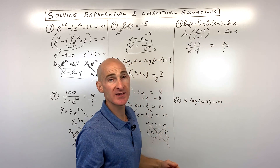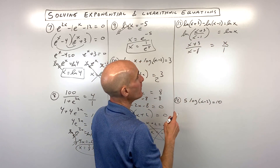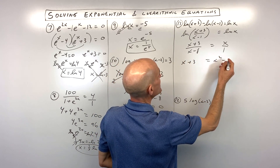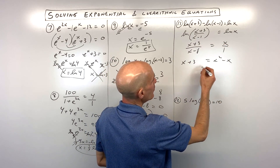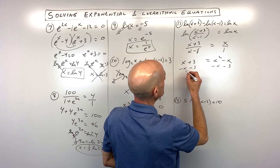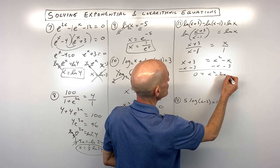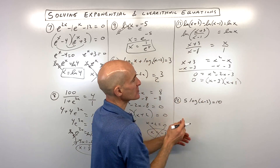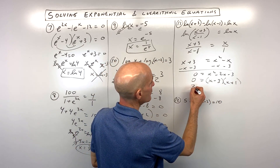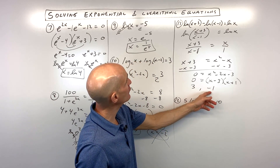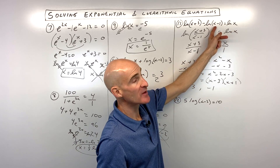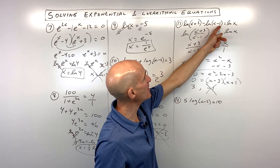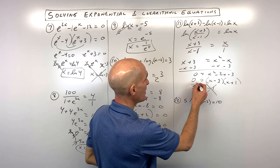Think of x as x over 1 and cross-multiply using the means-extremes property: x plus 3 equals x squared minus x. Get everything on one side — subtract x and subtract 3 — giving 0 equals x squared minus 2x minus 3. Factor: x minus 3 and x plus 1, giving x equals 3 or x equals negative 1. Negative 1 makes the arguments negative — extraneous. Checking x equals 3: 3 plus 3 is 6 (positive), 3 minus 1 is 2 (positive) — so x equals 3.